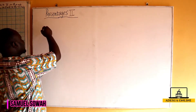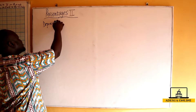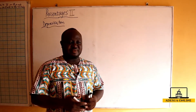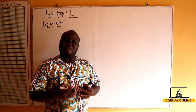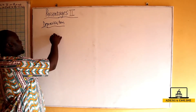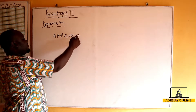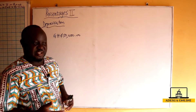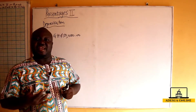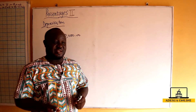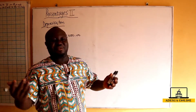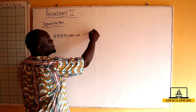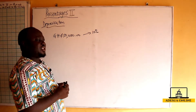Our next topic is depreciation. Assuming I go and buy a new car — a brand new car — and the value of this car I bought was 50,000 Ghana cedis. Now if this car depreciates each year by 10 percent, I want to find the value of my car after three years. The value of my car depreciates each year by 10 percent.